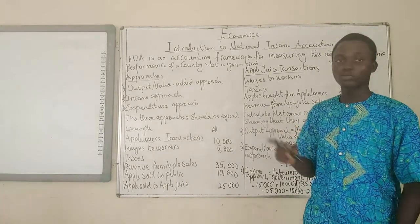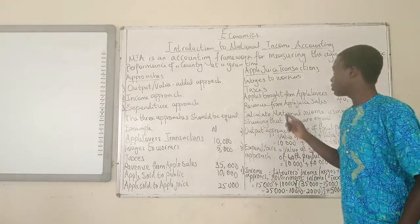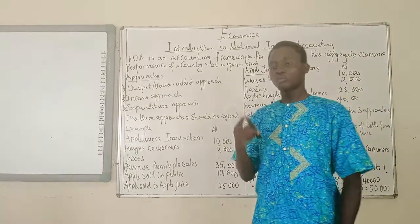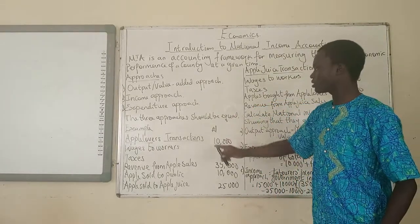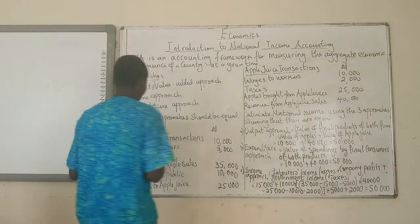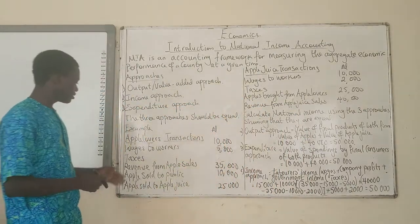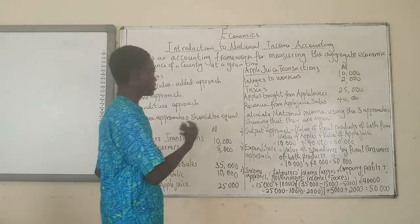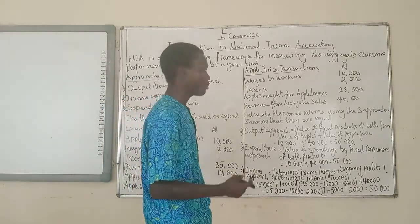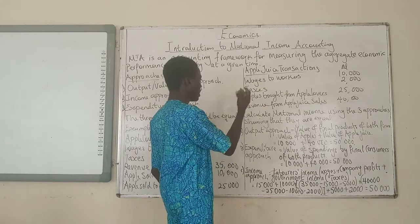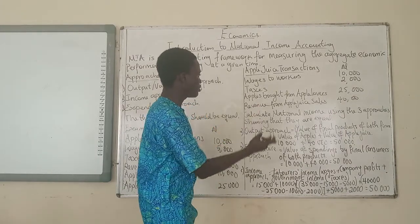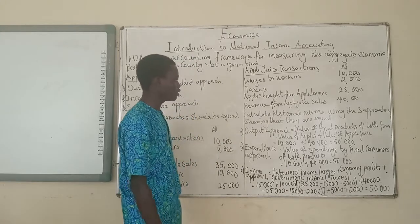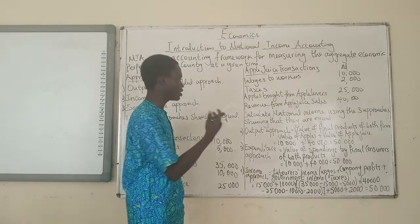Apple Lovers is one firm — it produces apples. And then we have Apple Juice, another firm that produces apple juice. Now we have data on them: wages to workers, taxes, revenue from apple sales, apples sold to the public, apples sold to Apple Juice. Then we have Apple Juice transactions for that particular year: wages to workers, taxes, apples bought from Apple Lovers, and revenue from apple juice sales. The question is, we should calculate national income using the three approaches, showing that they are equal.